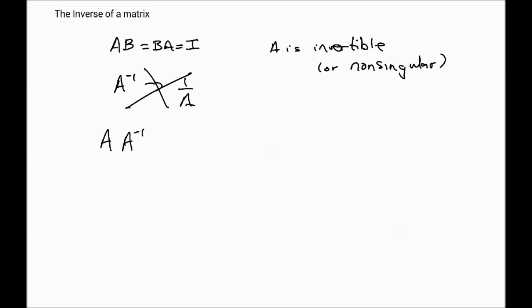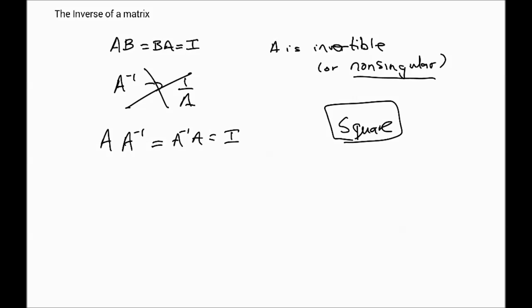The inverse of matrix A is that matrix which, when multiplied by A, is commutative and gives you the identity matrix. An important point: the inverse only exists for square matrices. Also, the terms non-singular and invertible imply that the opposite is possible — not all square matrices have an inverse. A matrix can be singular, meaning its inverse does not exist.